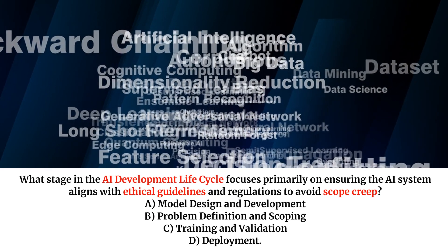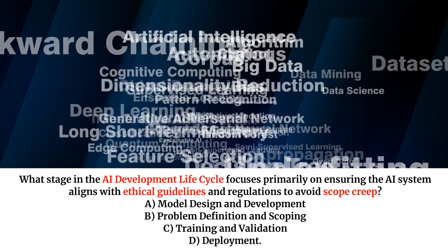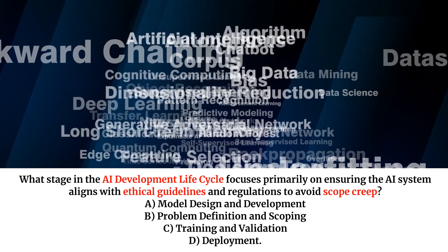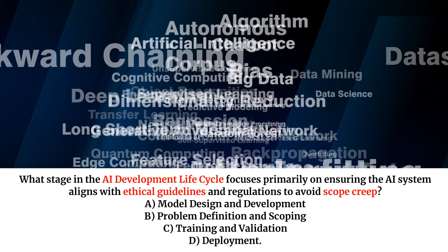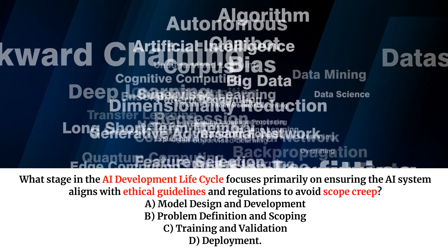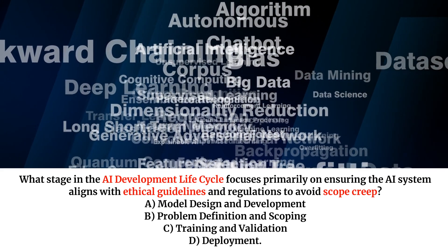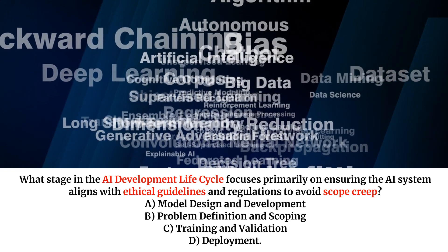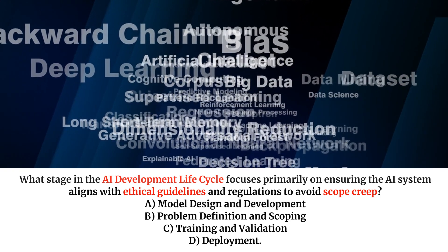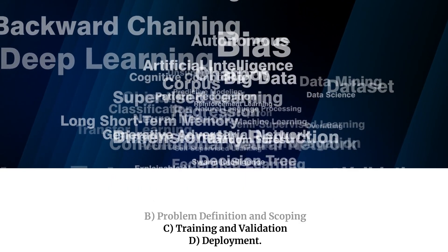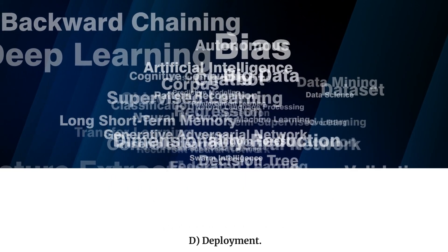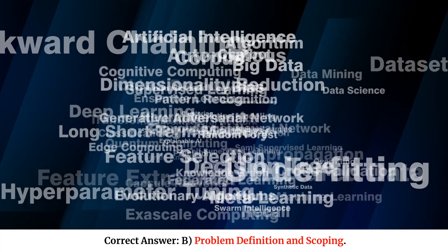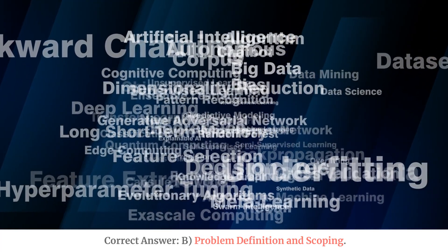What stage in the AI development lifecycle focuses primarily on ensuring the AI system aligns with ethical guidelines and regulations to avoid scope creep? A. Model design and development. B. Problem definition and scoping. C. Training and validation. D. Deployment. Correct answer: B. Problem definition and scoping.